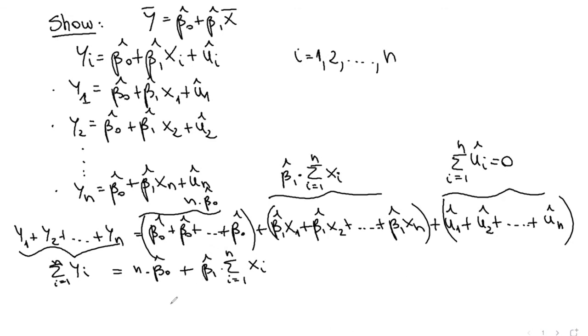And then the next step is pretty obvious. Just divide both sides by n. So I divide here by n, and I divide all of this term by n, which is the same as just dividing each component by n. Here I'm going to have that the n's cancel out.